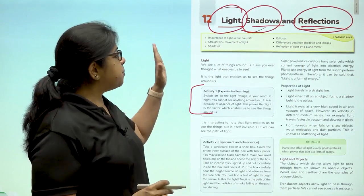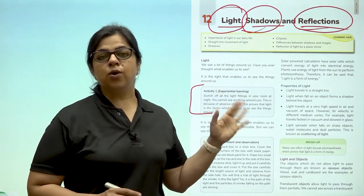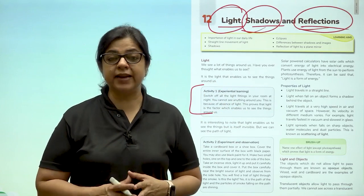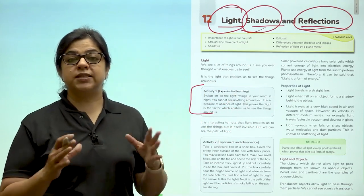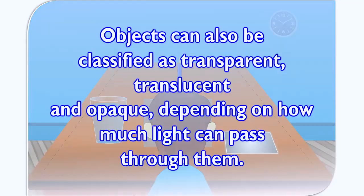So children, based on how the objects behave in front of light, we can divide the objects into three. Objects can also be classified as transparent, translucent and opaque, depending on how much light can pass through them.